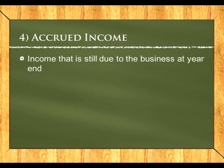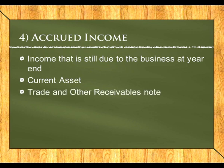Accrued income is income still owed to the business at year end but not yet received. The most common example is interest on a fixed deposit — we know the interest rate but haven't received the amount by year end. We create a current asset account for accrued income, which affects the trade and other receivables note. The entry is: debit accrued income and credit the income account, e.g., interest income.